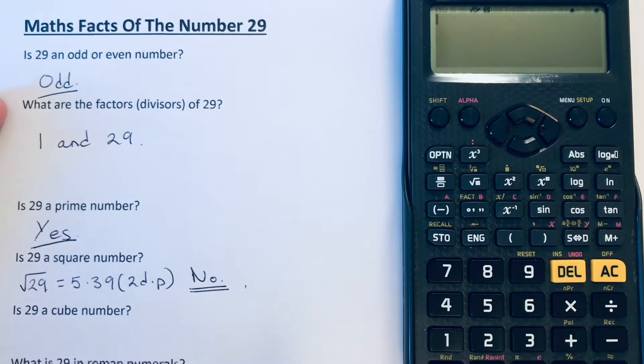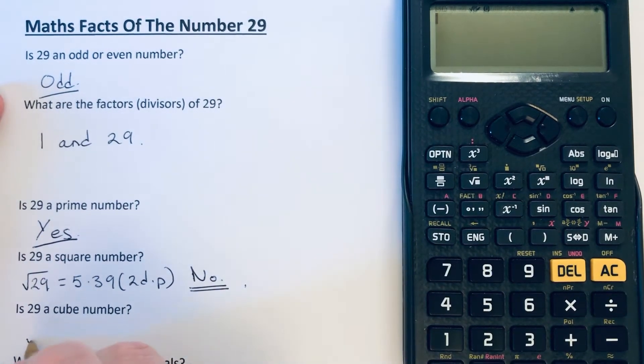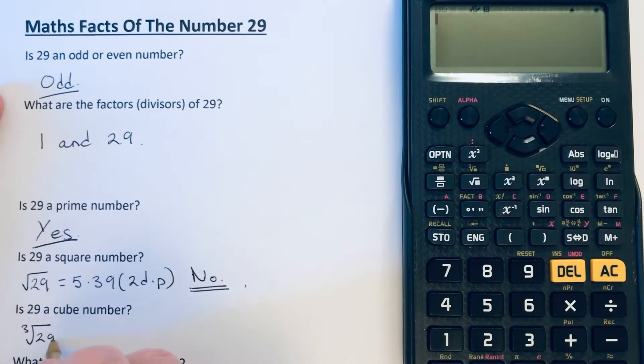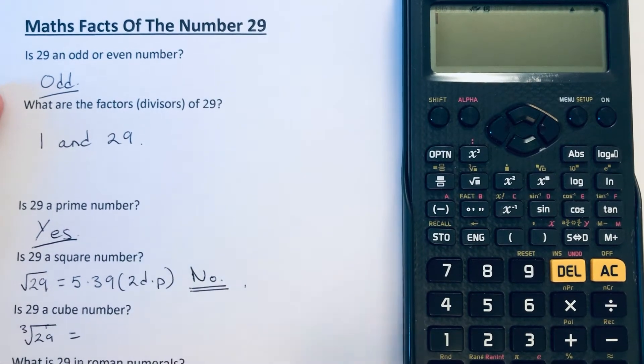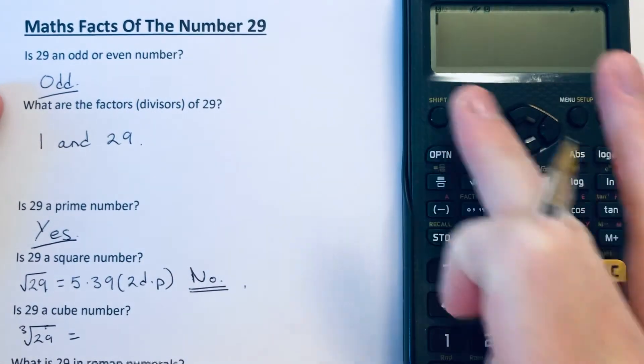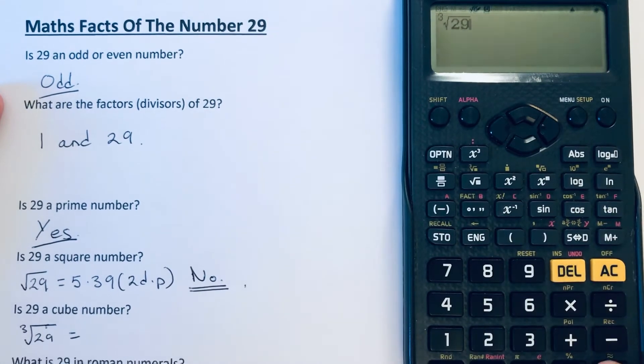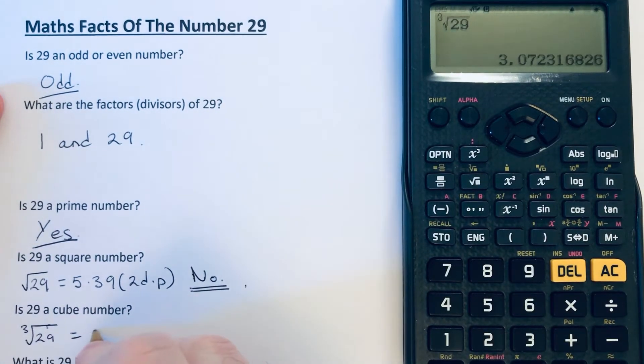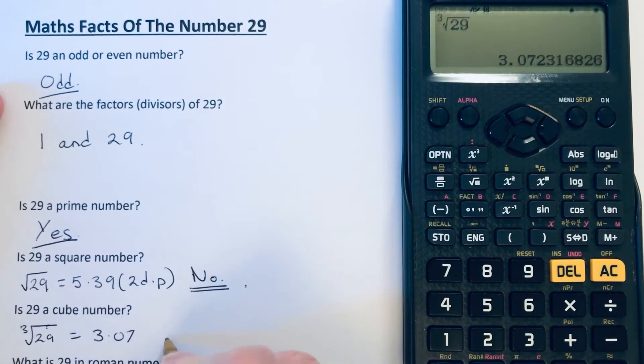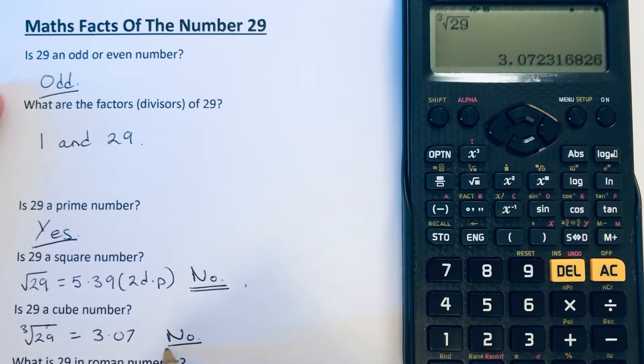Is 29 a cube number? Well, again, if it's a cube number, we should be able to cube root 29 to give a whole number. So the cube root of 29 is 3.07. So again, the answer to this question is no.